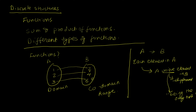The same element in the range could be the output of some other element in the domain — so one could map to two, and another element could also map to two, and that is allowed. But what is not allowed is for the same element to be mapped to two different outputs. Each element has to be mapped to a unique element, unique in the sense of only one.